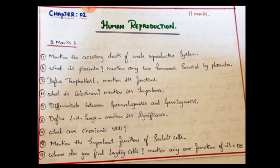Expected 2-mark questions: Mention the accessory ducts of the male reproductive system. What is placenta? Mention any two hormones secreted by the placenta — this is the most expected one. Define trophoblast and mention its functions. Next: What is the corpus luteum? Mention its importance.